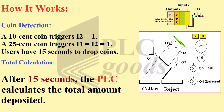Coin Detection: A $0.10 coin sets I2 to 1, while a $0.25 coin sets both I1 and I2 to 1. Users have 15 seconds to drop their coins into the machine.